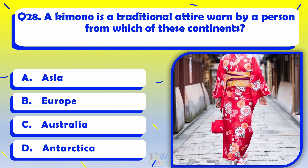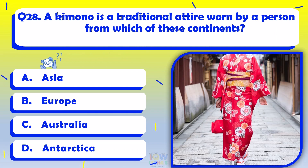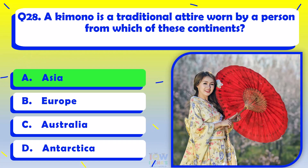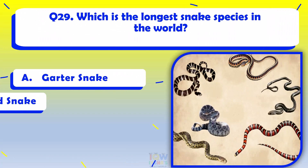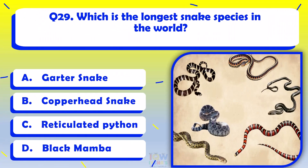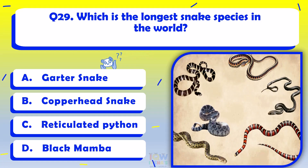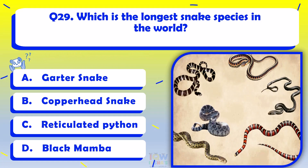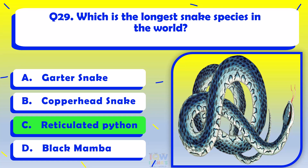A kimono is a traditional attire worn by a person from which of these continents? Asia. Which is the longest snake species in the world? Reticulated Python.